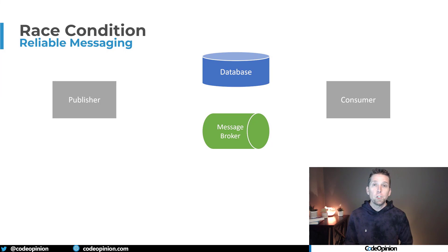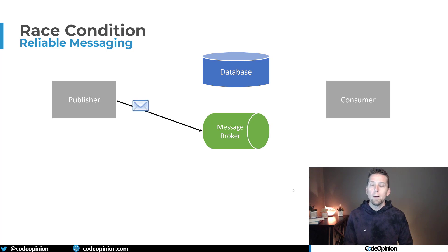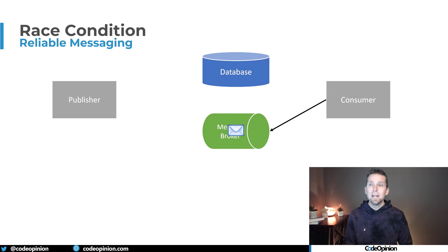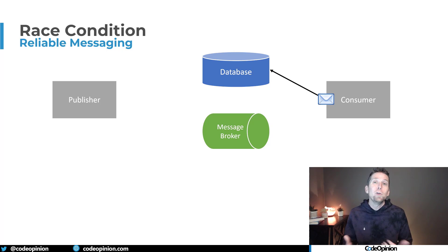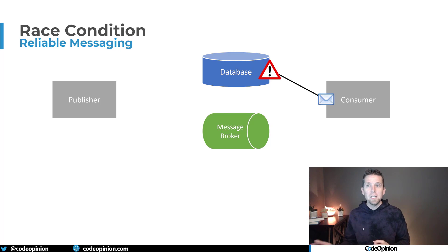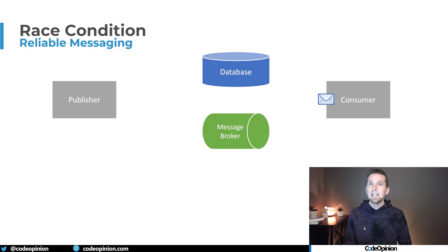The first issue with those two lines of code is a race condition, because we're publishing the event before we actually persist it to the database. We're publishing the order placed event to our message broker, but we could have a consumer - say, one that needs to send out the email confirmation - pick up that event immediately. When doing so, it may reach out to the database to get that order information to include in the email, but the problem is we haven't persisted it yet. So our consumer reaches out to the database for that order, but it's not there.